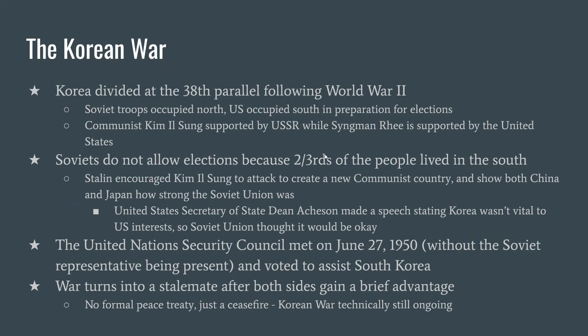The Korean War was one result of the Cold War getting started. After World War II, the peninsula of Korea was divided in half. Before World War II, Korea was a Japanese colony, and after the war it couldn't be given back to Japan. So it was decided that the Soviet army would occupy the northern half and the US army would occupy the southern half, with the goal of reuniting the two parts after elections could happen. But both sides had very different ideas for what was going to happen in Korea.